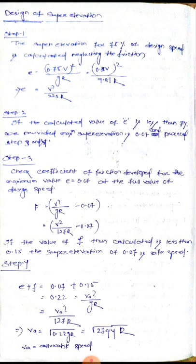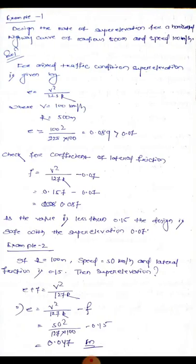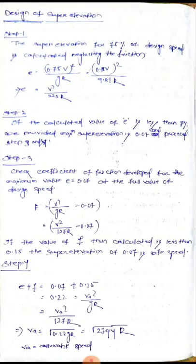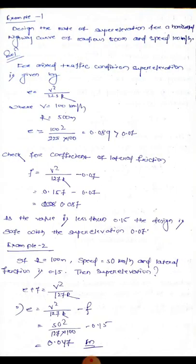We proceed to Step 3 and check the lateral friction. f equals v² by 127R minus 0.07. Substituting v = 100 km/h, R = 500 m: f equals 100²/(127 × 500) minus 0.07 equals 0.157 minus 0.07 equals 0.087. Since 0.087 is less than 0.15, the design is safe with super elevation of 0.07.